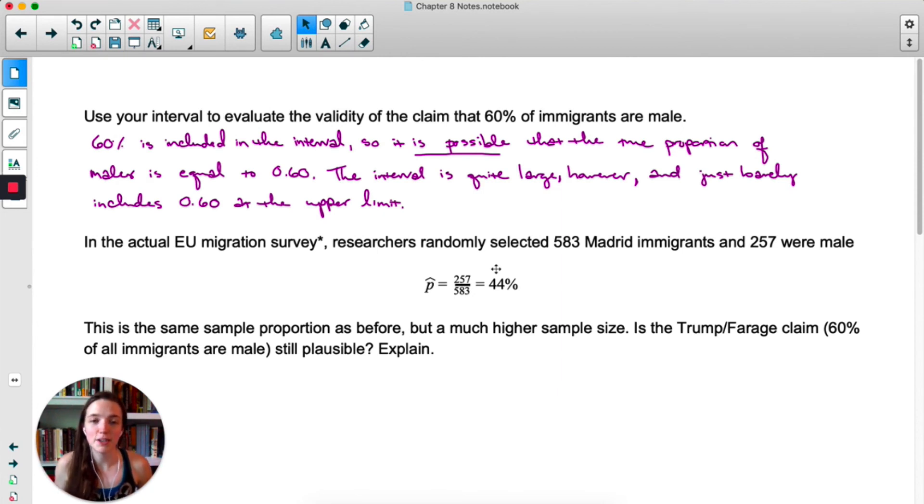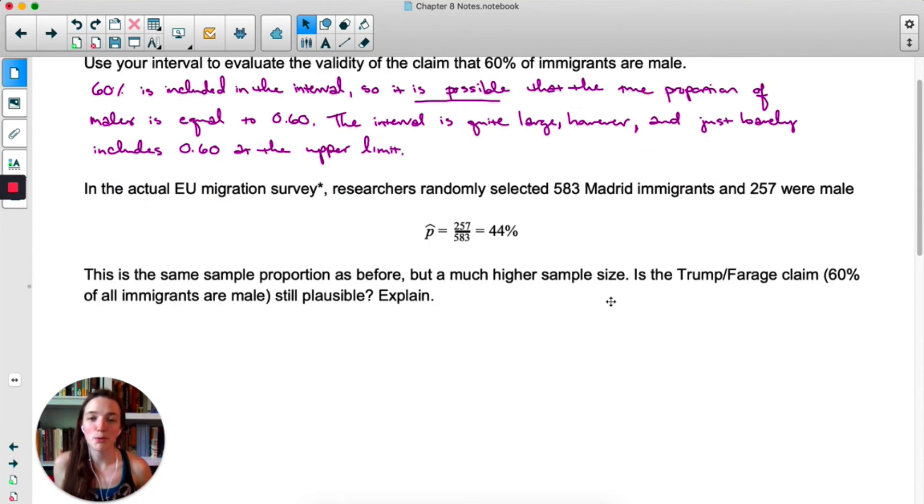So researchers randomly selected 583 immigrants from the registrations. And what do you know, 44% were male. It's almost like that mock data was created on purpose to match. Alright, this is the same proportion as before, but a much higher sample size. So is that claim, that 60% of immigrants are male, still plausible?